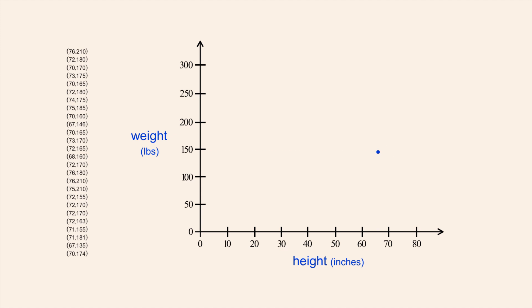Likewise, the ordered pair corresponding to the second player is represented by a point at a horizontal position of 76 inches and a vertical position of 210 pounds. Each of the remaining ordered pairs is plotted in the same way.